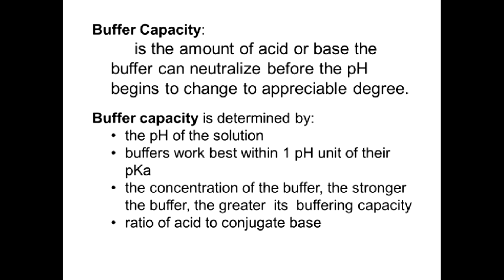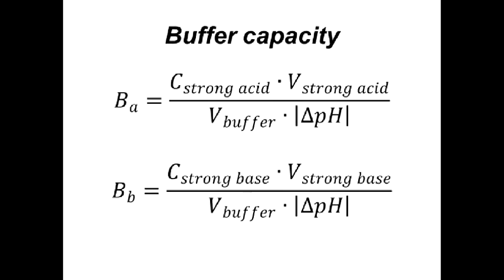Buffer capacity is the amount of strong acid or strong base that can be added to 1 liter of buffer solution to change its pH by 1. Buffer capacity depends on the nature of the buffer solution and the concentration of its components. Here are the formulas used to calculate buffer capacity for strong acid addition or strong base addition.